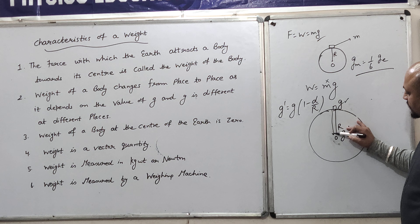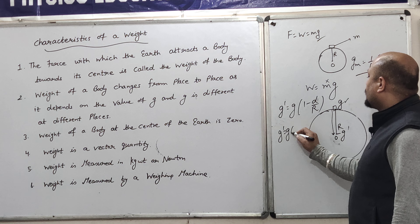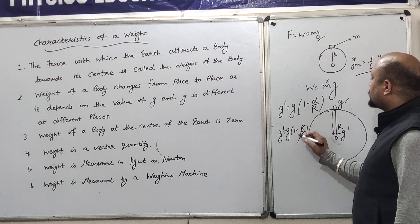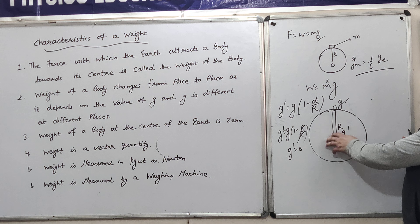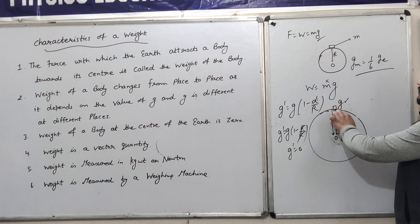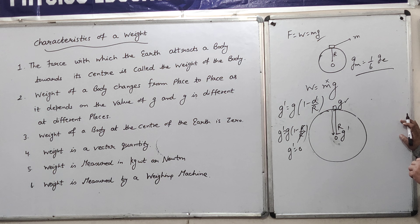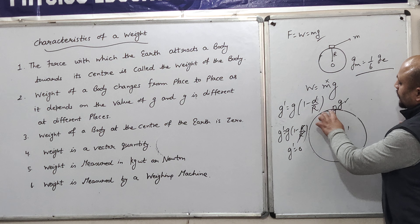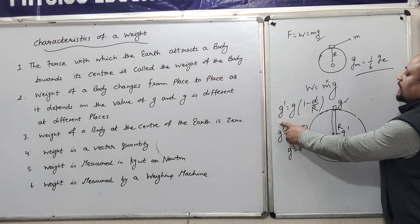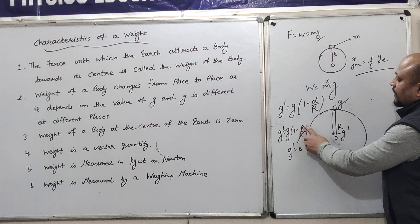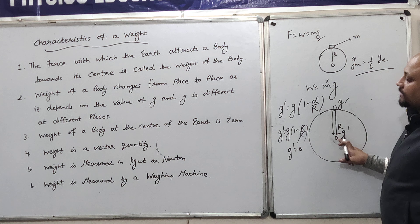The distance traveled to reach the center is d, and at the center d equals r. So we place d equal to r in the formula: g' = g(1 - d/r). When d equals r, then r cancels r, giving 1 - 1 = 0, so g' equals 0. This means at the center of the earth, gravity is zero. Therefore, weight at the center of the earth is also zero, since W = Mg and g becomes zero there.